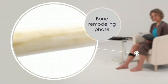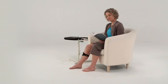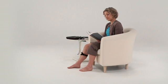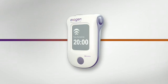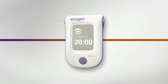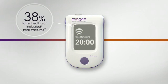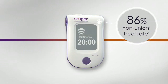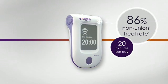While this natural repair process often succeeds, bone healing can be delayed or fail altogether. And that's where Exogen comes in. Level 1 clinical studies showed that Exogen accelerates the healing of indicated fresh fractures by 38% and was proven to heal 86% of non-unions in just 20 minutes a day.